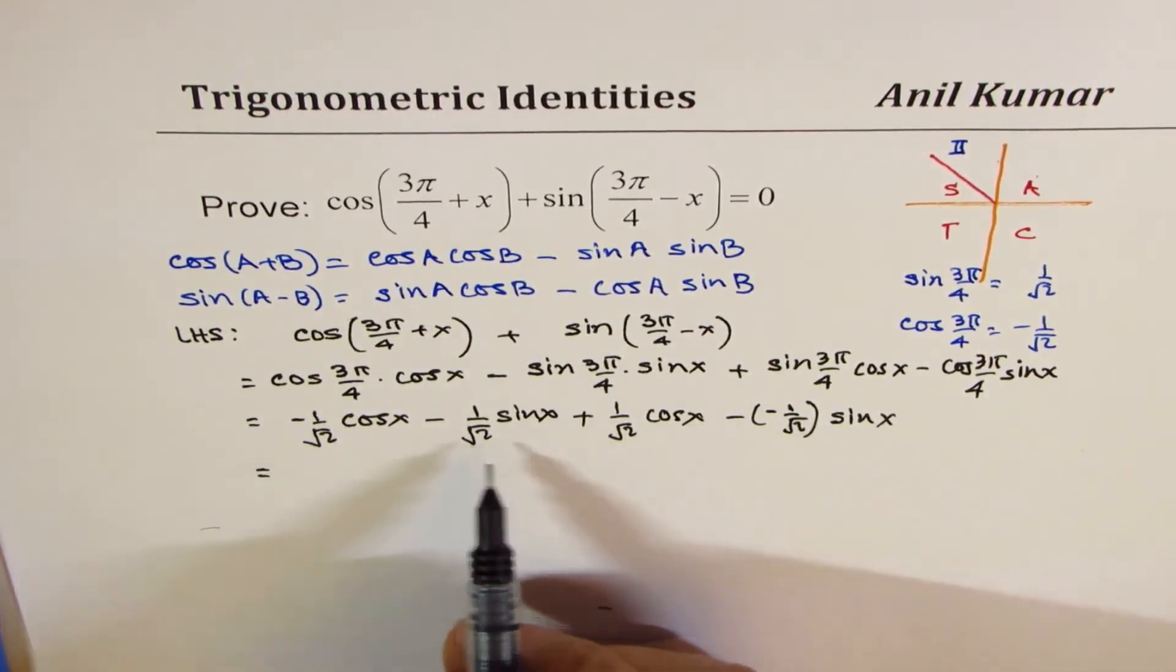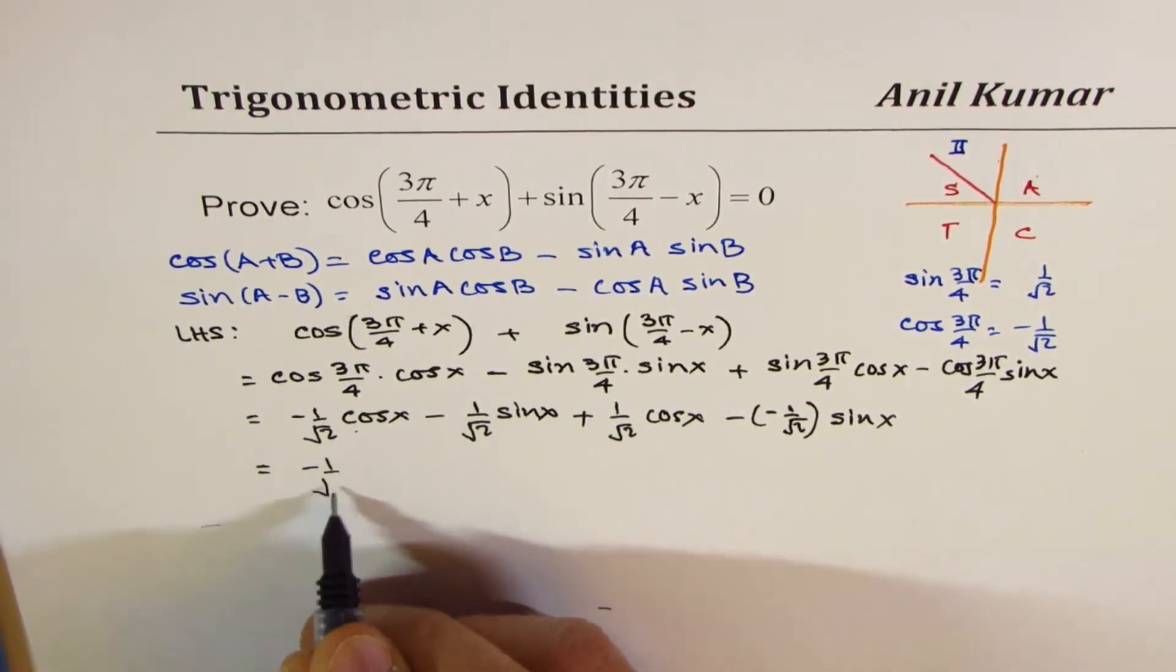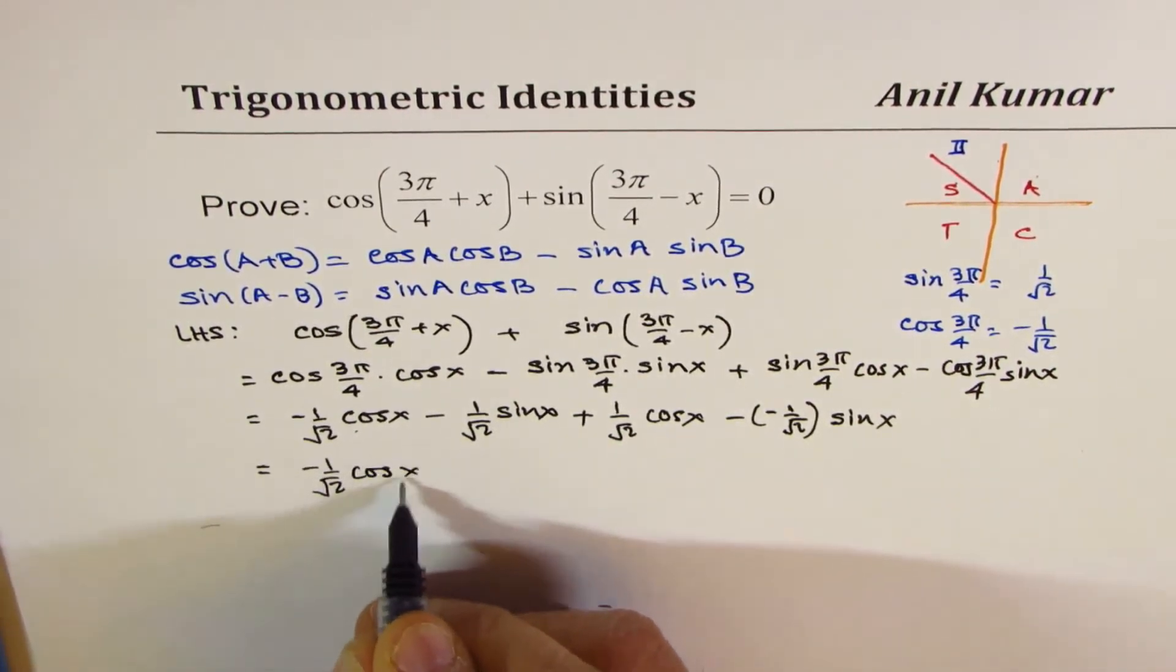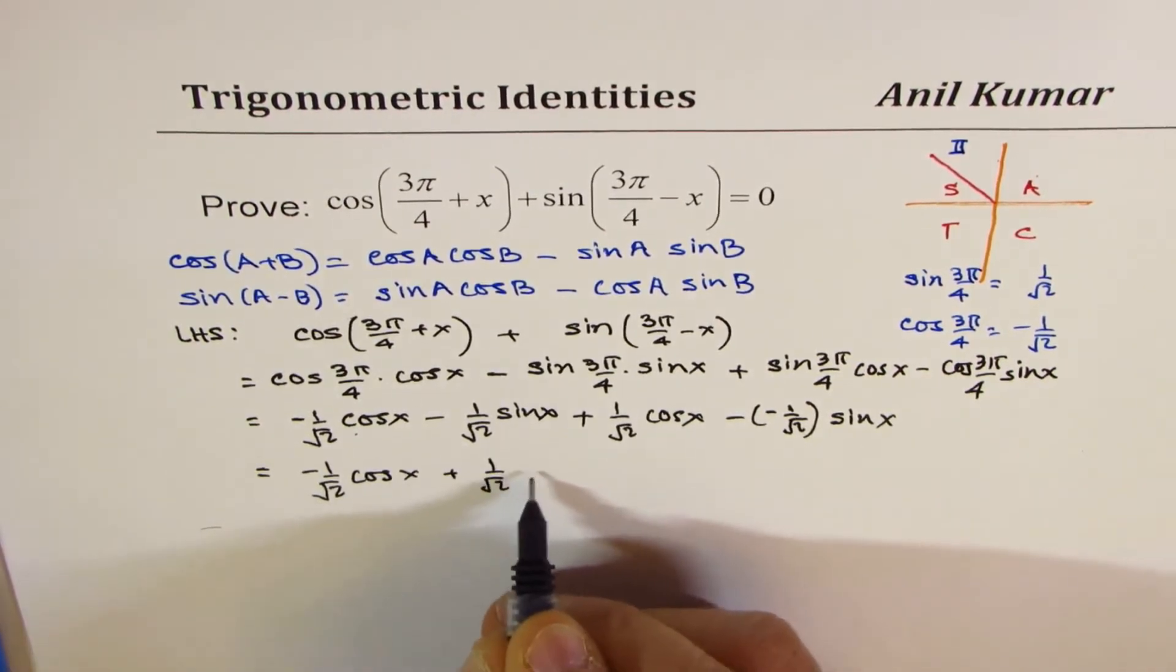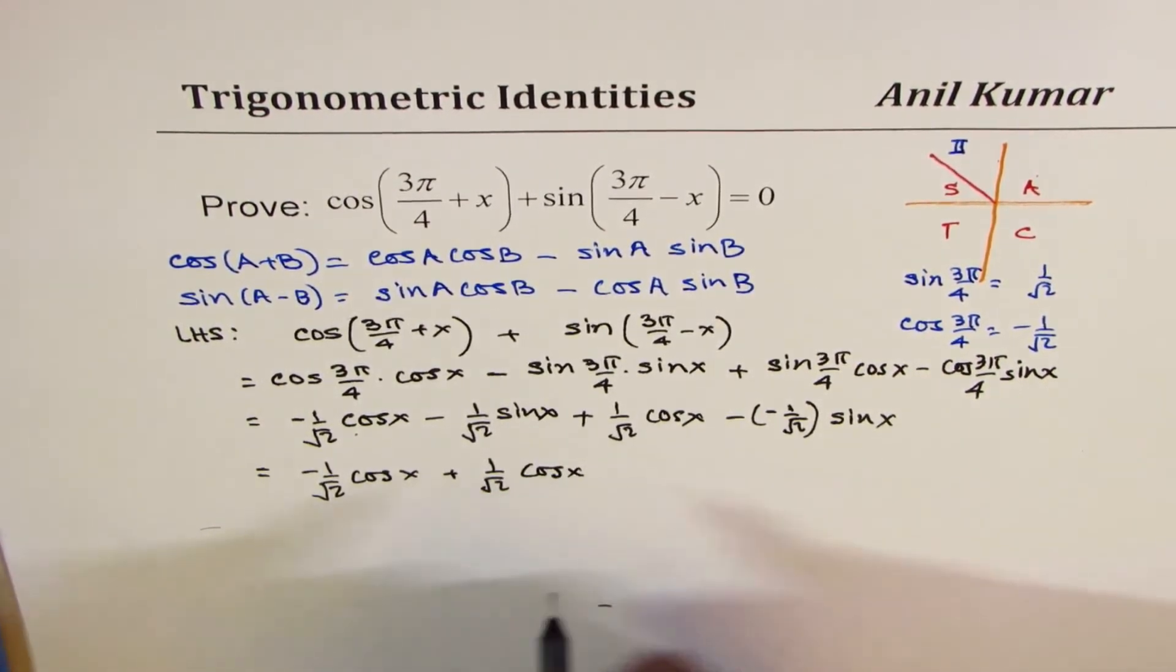So we can rearrange bringing the cos terms together. We have 1/√2 cos(x) + 1/√2 cos(x). They'll become 0.